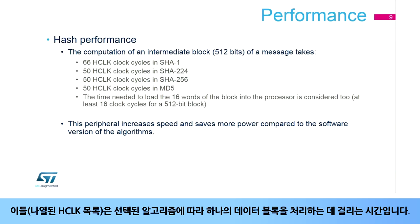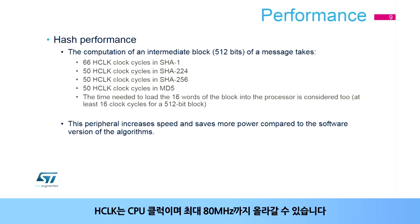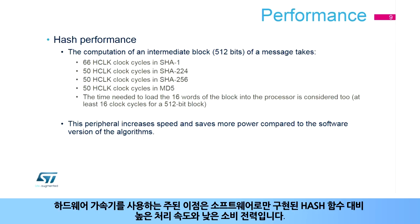These are the times it takes to process a single block of data, depending on the chosen algorithm. HCLK is the CPU clock and can go as high as 80 MHz. Note that the main benefit of using a hardware accelerator is to increase speed and save power compared to a full software implementation of the hash functions.